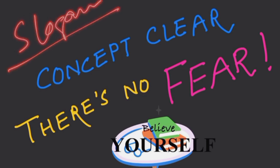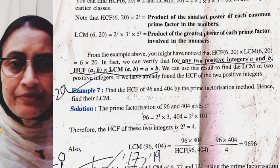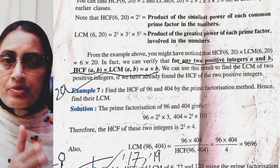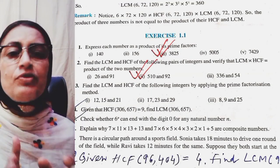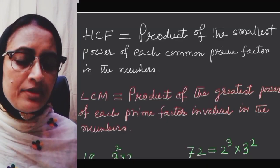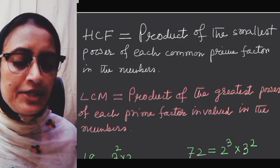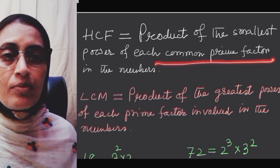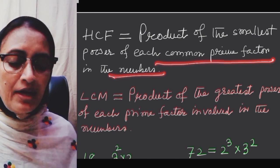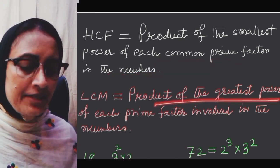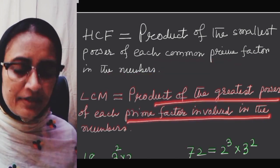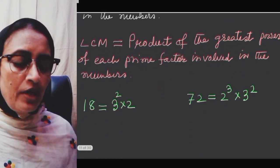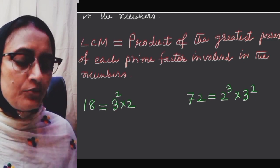Before doing question number two, I want to briefly explain Highest Common Factor, that means HCF, and Least Common Multiple, that is LCM. HCF is equal to the product of the smallest power of each common prime factor of the numbers. LCM is equal to the product of the greatest power of each prime factor involved in the numbers. For example, 18 = 3² × 2 and 72 = 2³ × 3².